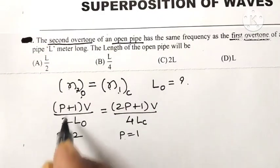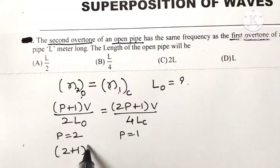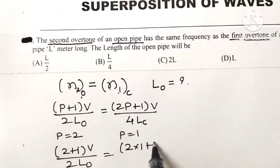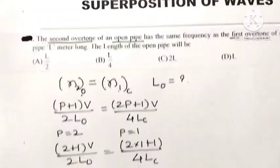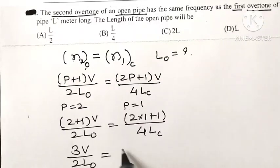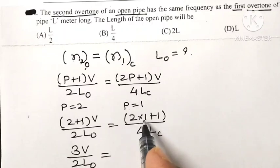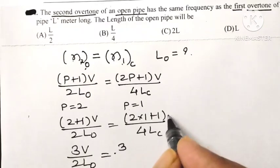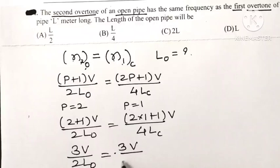So, (2+1)v divided by 2L₀ equals (2×1+1)v divided by 4Lc. This gives 3v divided by 2L₀ equals 3v divided by 4Lc.